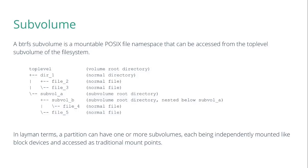A Btrfs sub volume is a POSIX file namespace that can be mounted as a block device and operated on just like traditional mount points. The Btrfs layout has a top-level root directory that holds one or several sub volumes. The layout of the sub volumes can be flat, nested, or a mix of both. Sub volumes can be mounted as read-only or read-write.